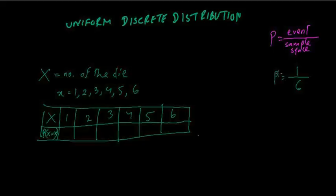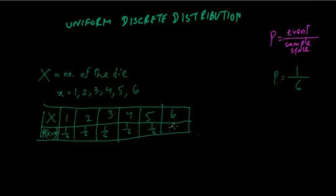In a die there is one each of 1, 2, 3, 4, 5, and 6, so each of them has a probability of 1/6. Written down, every value — 1 through 6 — has probability 1/6. It will be exactly the same for all outcomes.